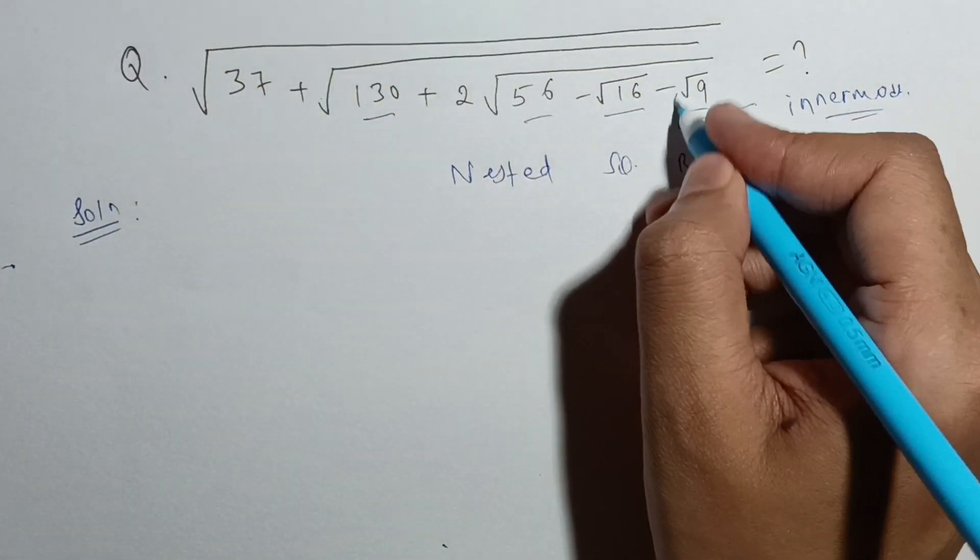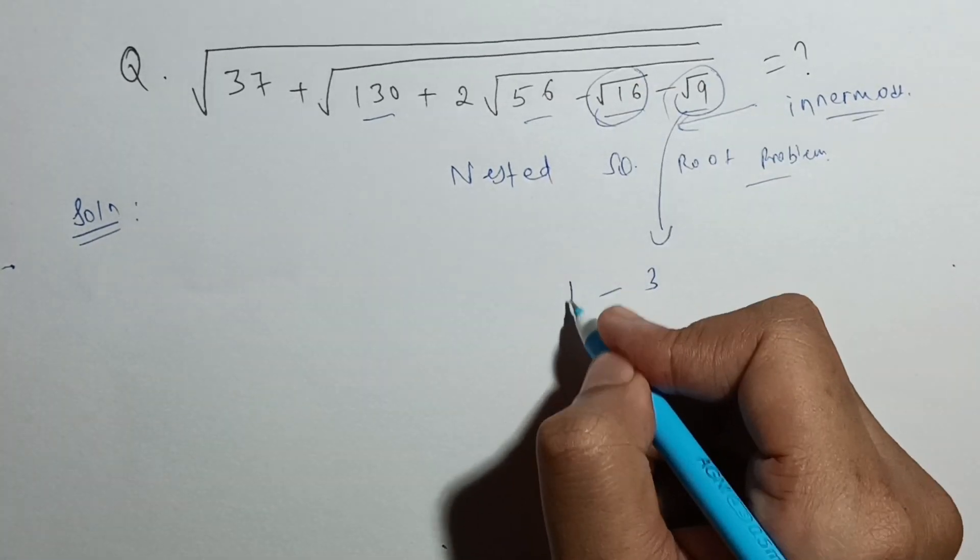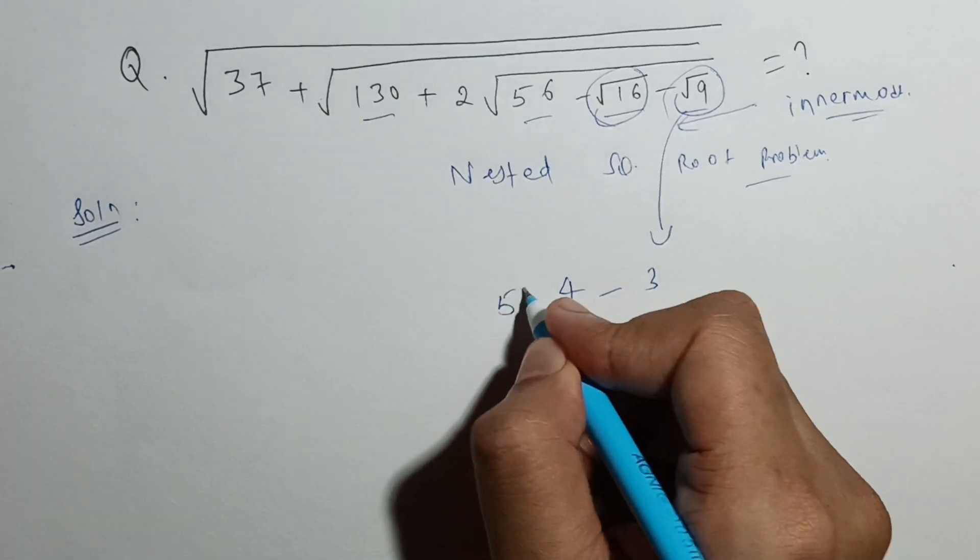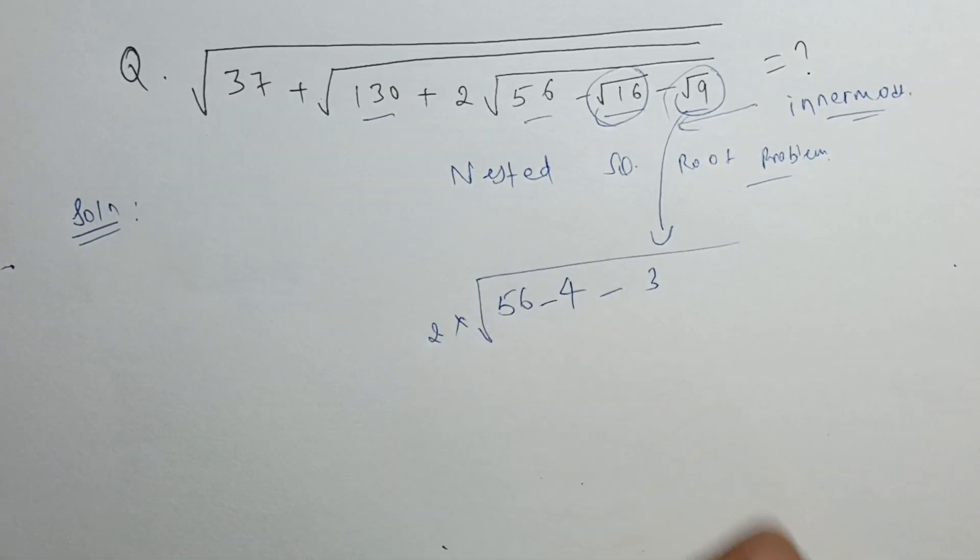So first I will solve this one. Root 9 is easy, this will give me 3. Root 16 is also easy, this will give me 4. So 56 minus 4 minus 3 multiplied by 2.